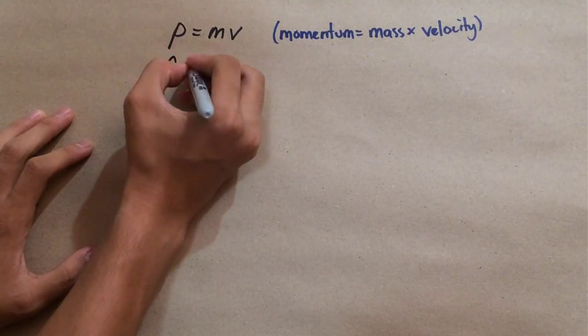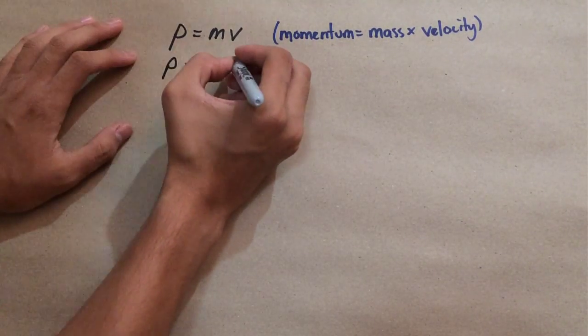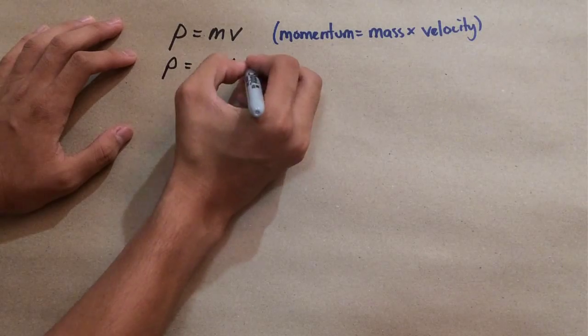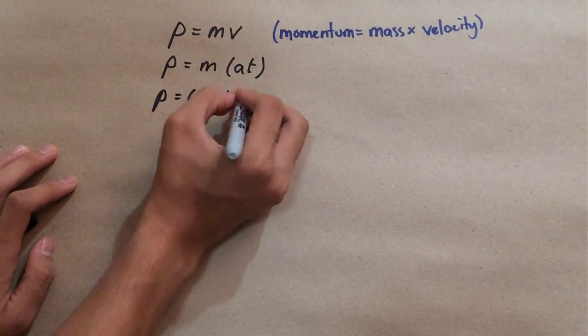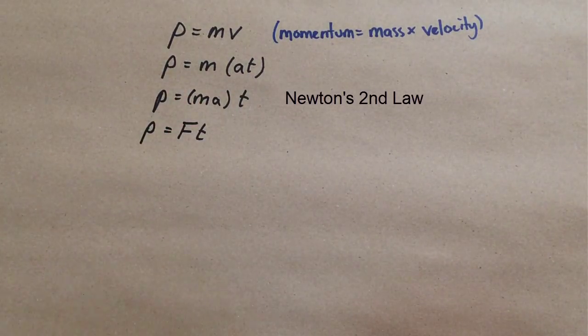That's it really. Now by rearranging the equation for momentum, P equals mv, we can also find that momentum equals force times time. So that means if you apply a certain amount of force on an object for some period of time, you would change its momentum.